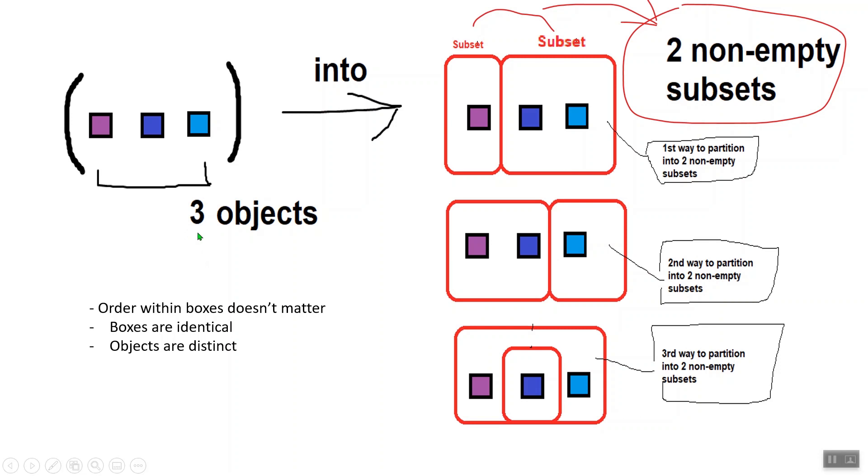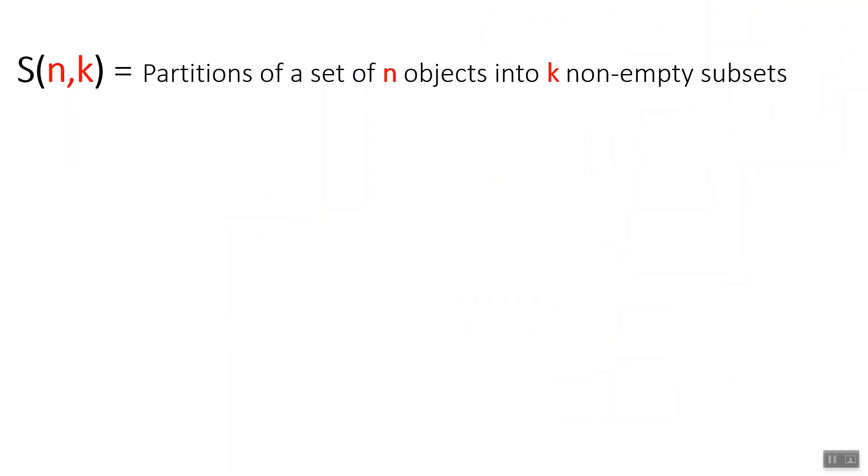There are several notations for these numbers, but here's the one we'll be using in this video. S(n,k), which denotes the number of partitions of a set of n objects into k non-empty subsets.